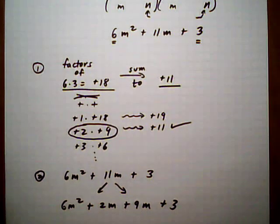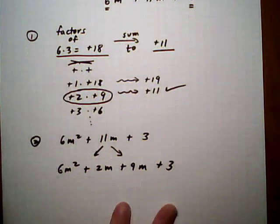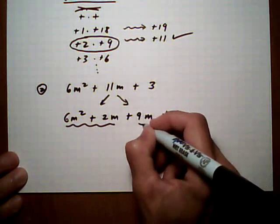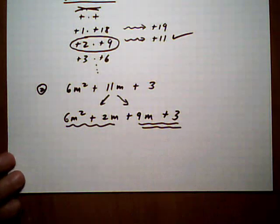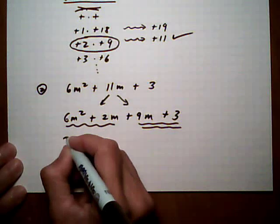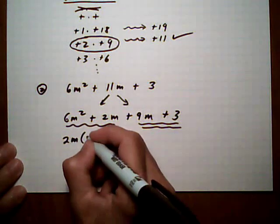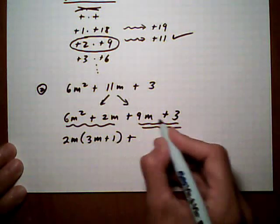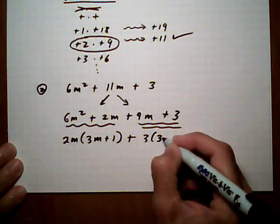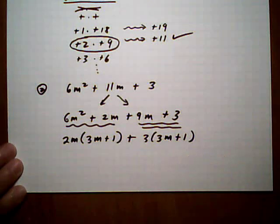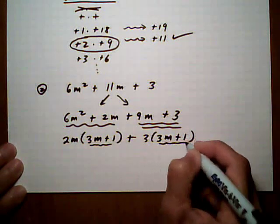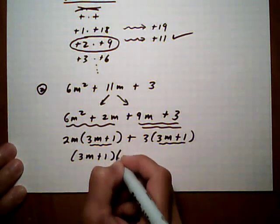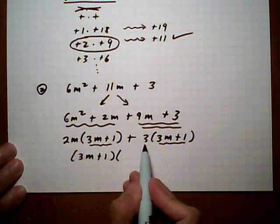And now we're going to factor by grouping. So I take those two and those two and pair them up separately. So here I can pull out 2m and I'm left with 3m plus 1. Plus, take out a 3, and I'm left with 3m plus 1. That looks good because now I have this common binomial. Pull out the common binomial of 3m plus 1. And we're left with 2m plus 3.